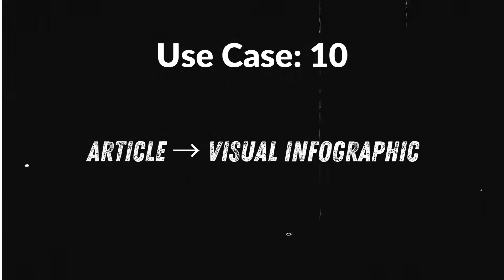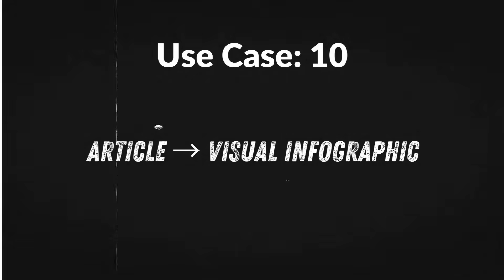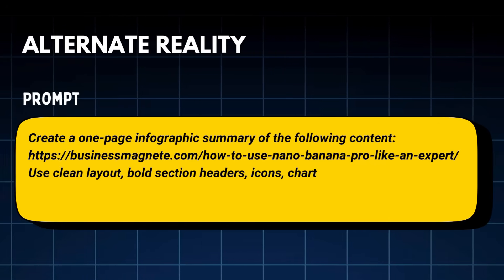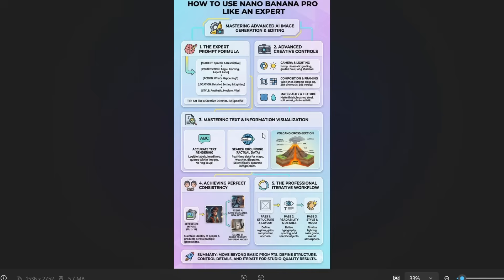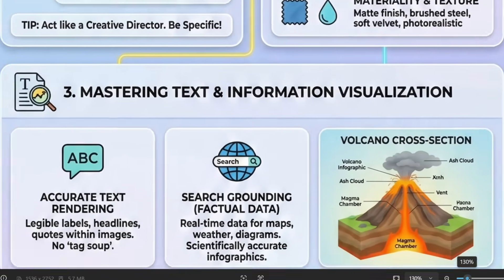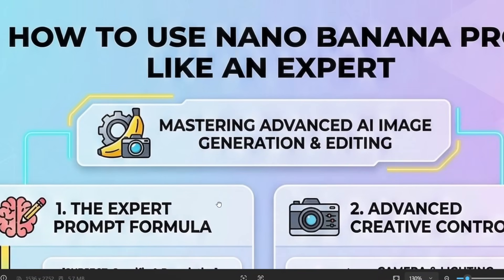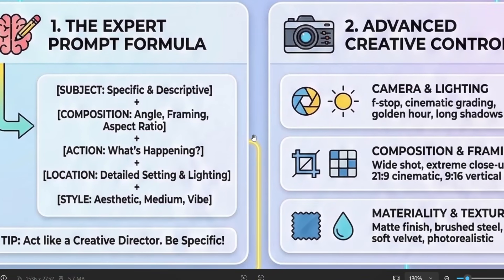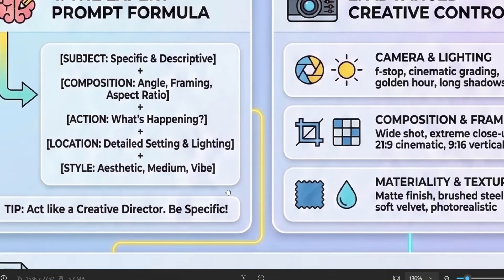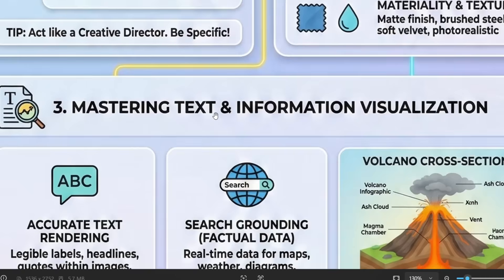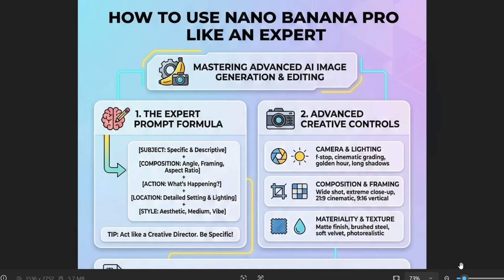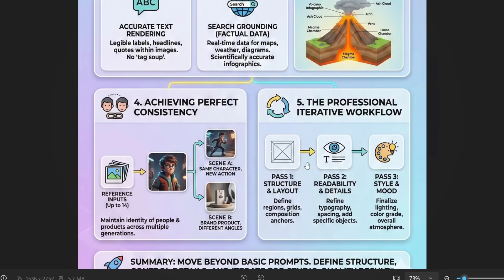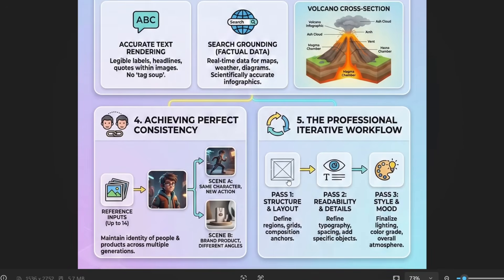Use case 10: Convert an entire article to an infographic. I paste my recently published article and generate. This is something that normally takes a designer, a researcher, and hours of layout work — here it's built instantly, structured, readable, and visually organized. It perfectly explained my SLCT framework for Nano Banana. I've added a link to the related video in the description.